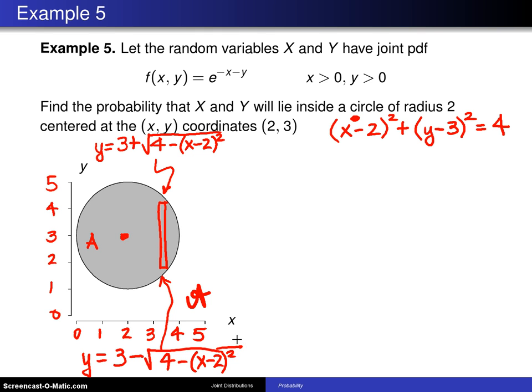So in order to set up this integral for the probability that we lie inside the circle, that is the probability x minus 2 squared plus y minus 3 squared is less than 4. That's the probability we're interested in.